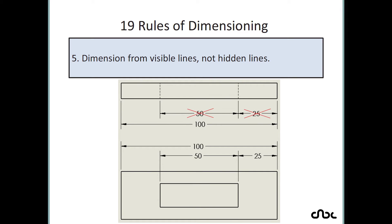Rule number 5: dimension from visible lines, not hidden lines. You should never place any dimension for a hidden line — this is one of the most prominent rules. You cannot place a dimension for a hidden line; you should always reference solid visible lines.